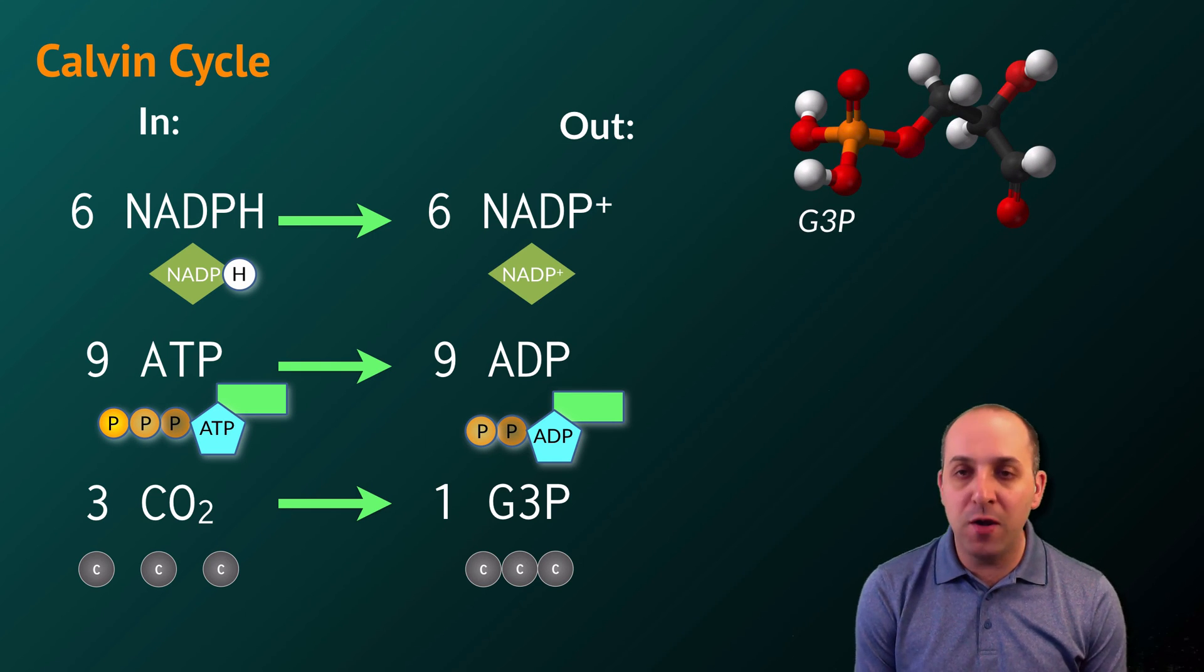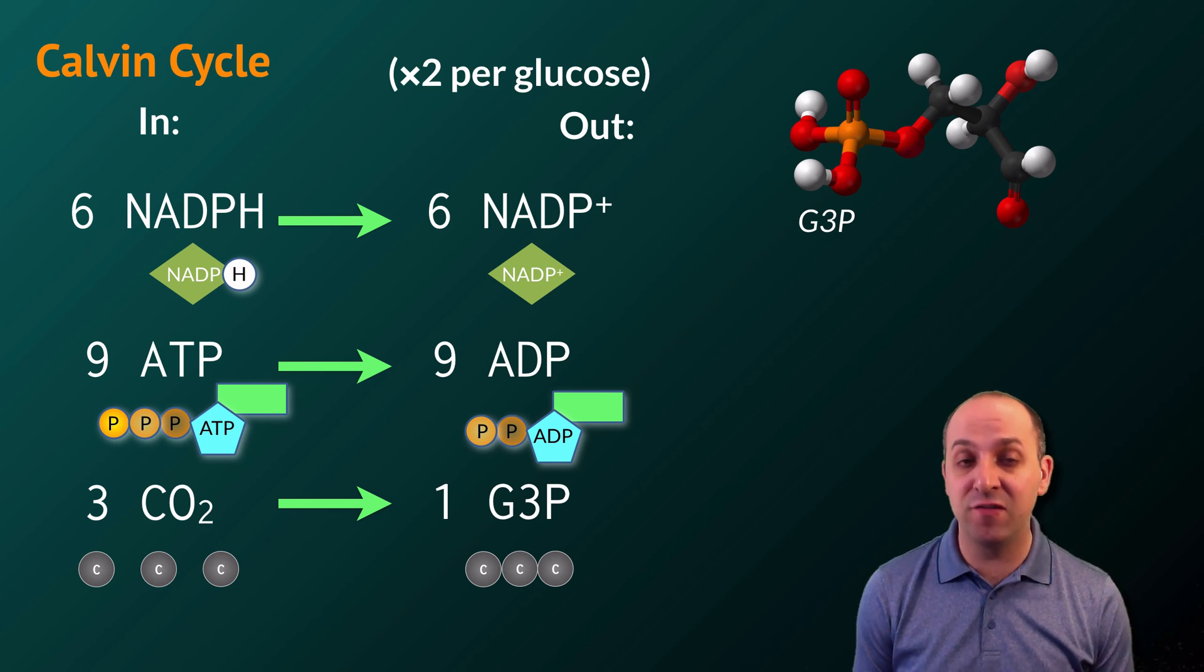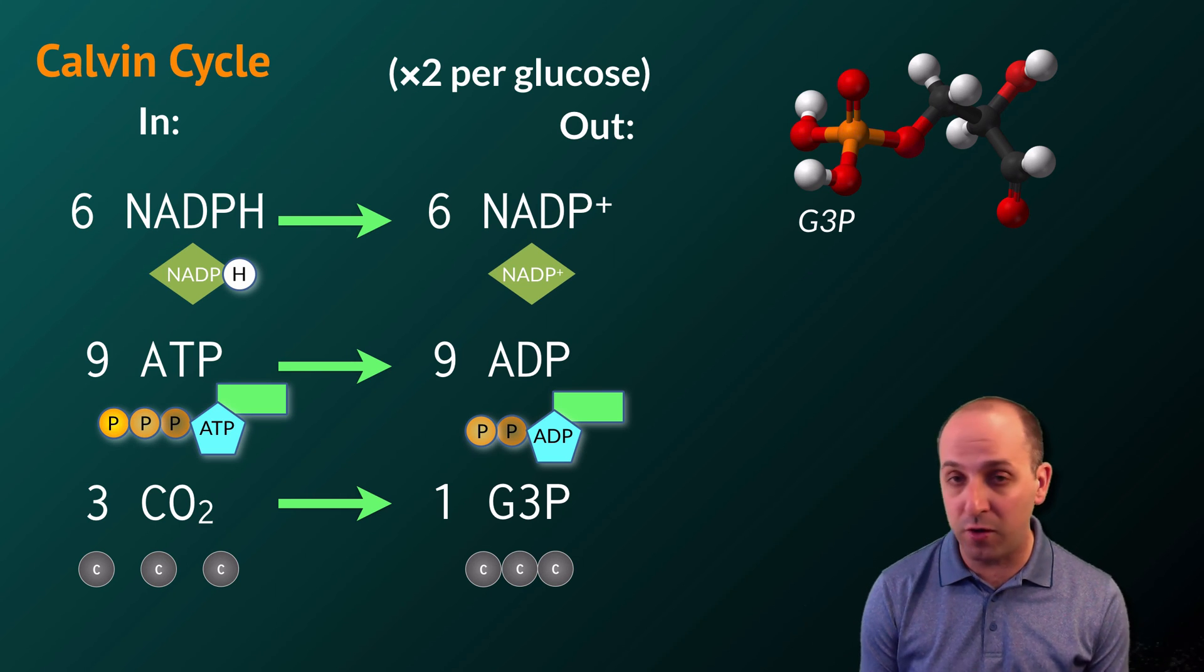G3P is a three-carbon sugar precursor molecule. In order to make a glucose molecule, we'll actually need to run the Calvin cycle twice and convert those two G3Ps into one six-carbon glucose molecule.